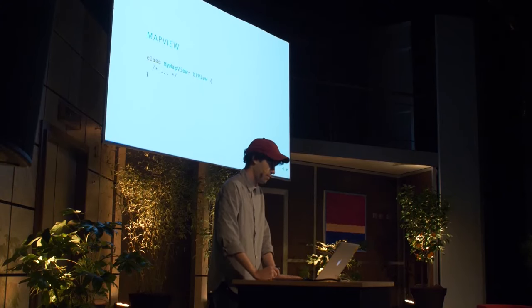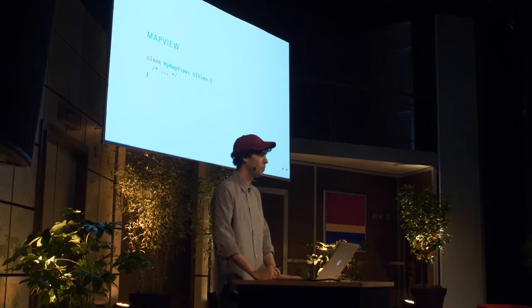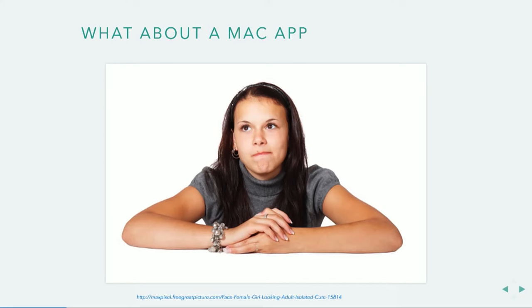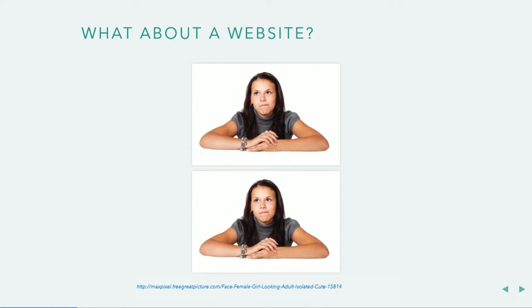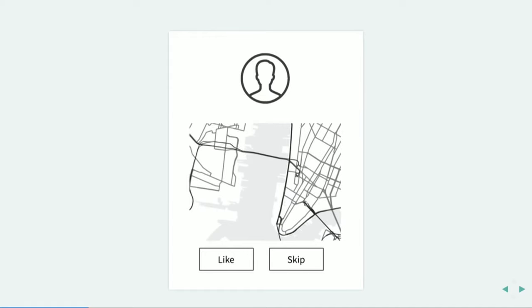But what if we wanted to do something else? What if we wanted to make a Mac app? Well, we'd have to do the same stuff all over again, but with NSViews. If we wanted to do the same thing on the web, we'd have to use HTML, CSS, and JavaScript. If we know we're going to have an image view, a map view, two buttons, laid out in this way, why do we have to do the same thing over and over again?